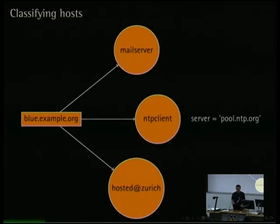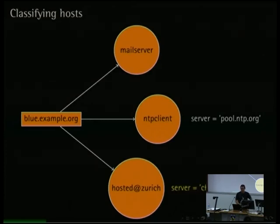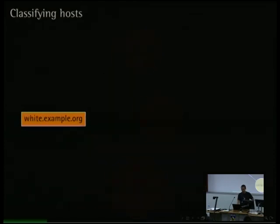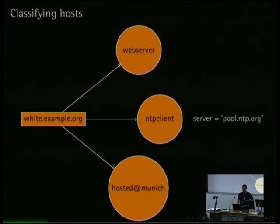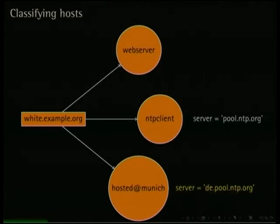Here's a quick example. For an NTP client you might want to define a default server — pool.ntp.org — but all machines hosted in Zurich should get the Swiss subpool of that. And it's pretty logical that if you have another host called 'white', also an NTP client but hosted in Munich, it should get the German subpool.